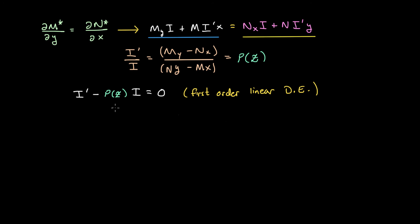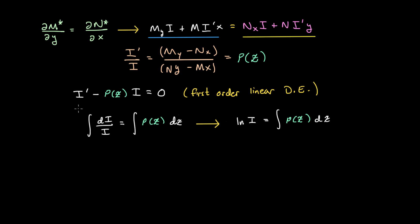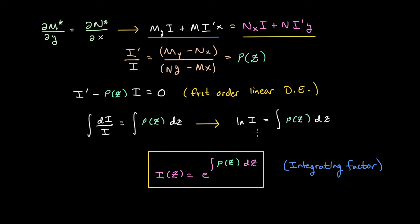We can then write i′ minus p(z) i equals 0, and we notice that this is a first-order linear differential equation in i. Using separation of variables, the integral of di over i equals the integral of p(z) dz, from which we find ln(i) equals the integral of p(z) dz. Solving for i, we have i of z equals e to the integral of p(z) dz. This is the integrating factor to multiply our original equation by to make it exact, though sometimes this function can be rather complicated.